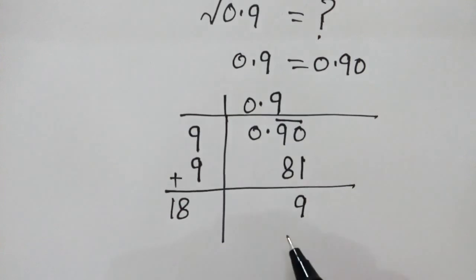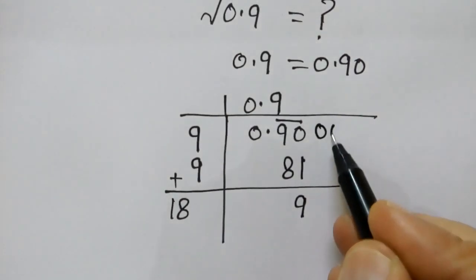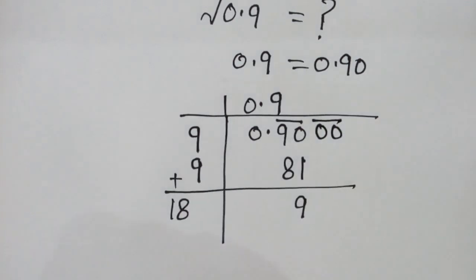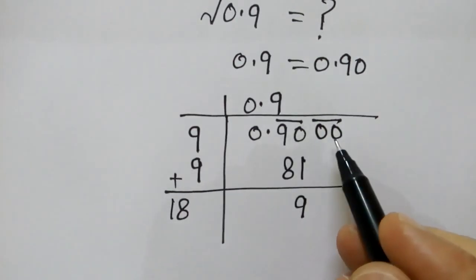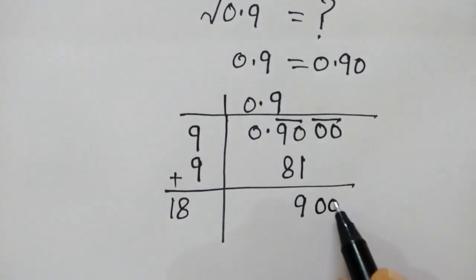Now, what will we do? We will increase zeros in pairs. This is the main point. Zeros will always be increased in pairs, and here will come the pair.